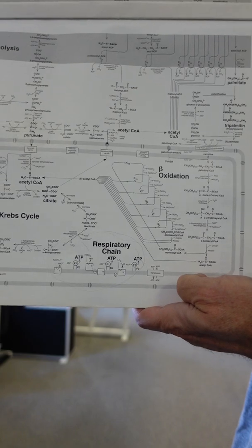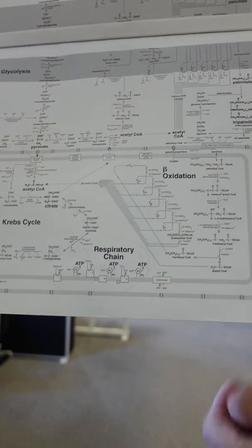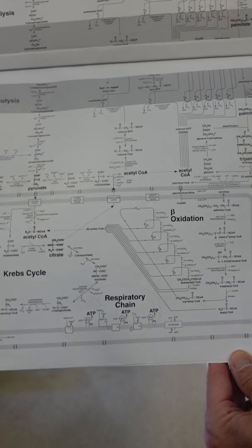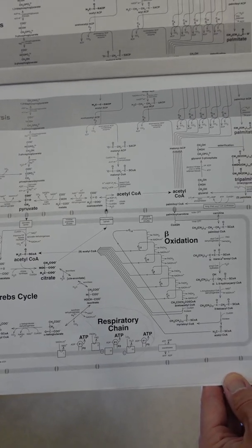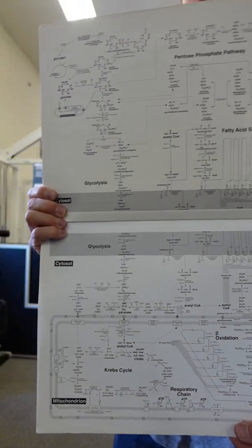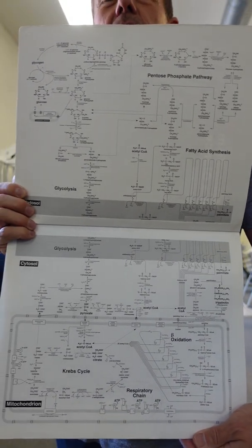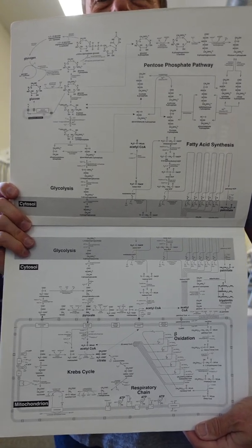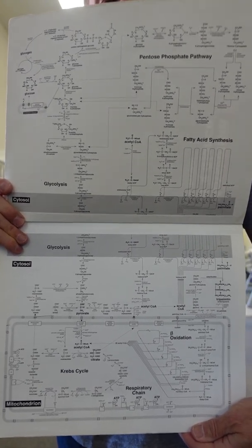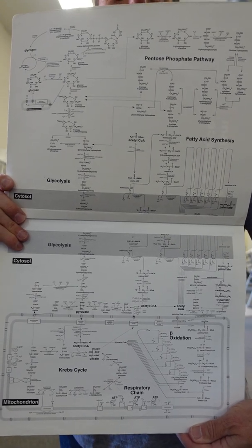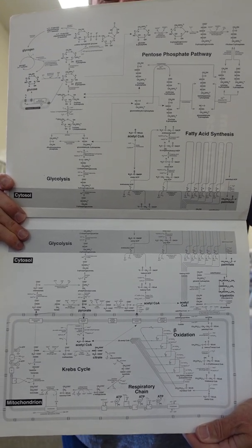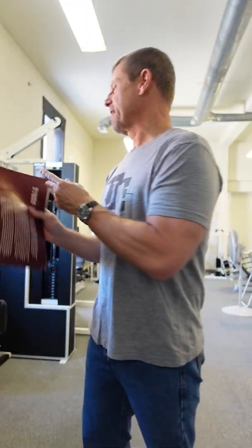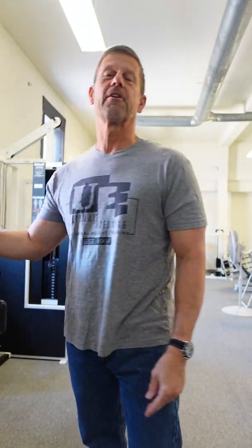He discusses also how this low energy state signals for energy storage rather than energy utilization. And if you have this diagram to refer to, you can see how fructose diabolically lowers energy currency in the body while simultaneously inhibiting fat utilization and promoting fat storage. At the end of this, I doubt that you'll ever want to have another soft drink in your life.